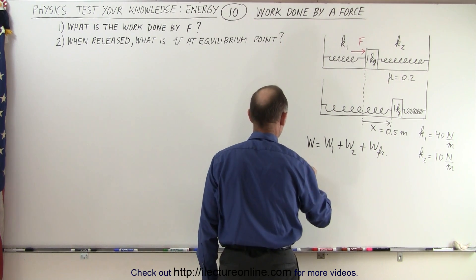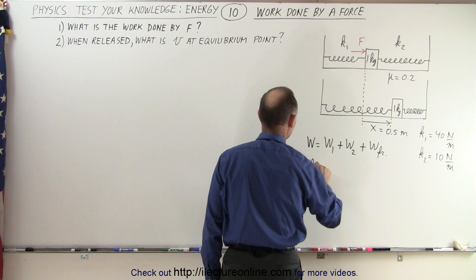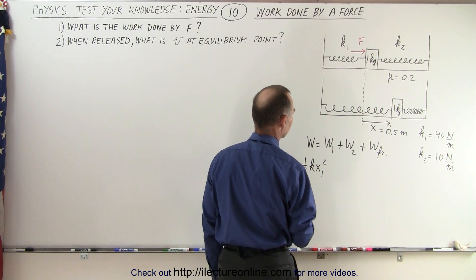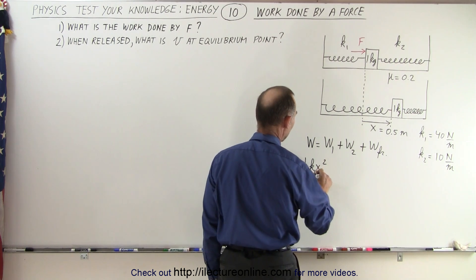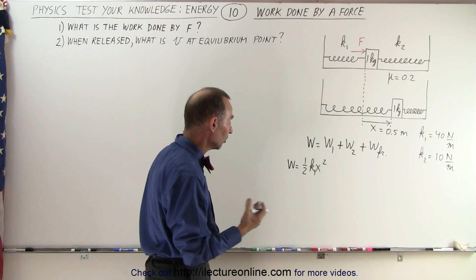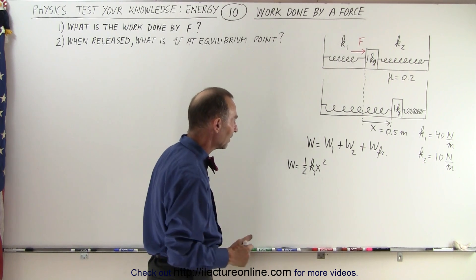The work done is equal to one half k1 x squared—actually it should be k1 x squared because x will be the same for both springs, so we don't have an x1, we simply have an x—then plus one half k2 x squared.